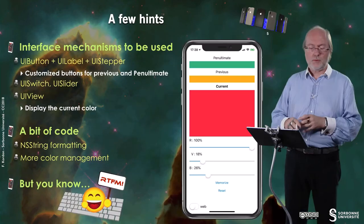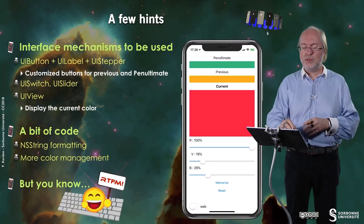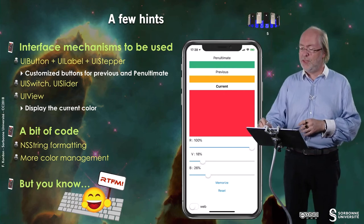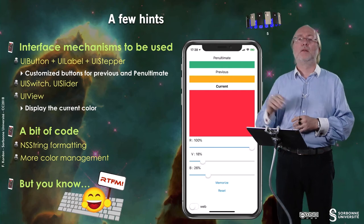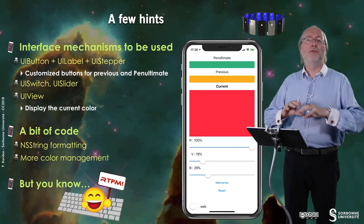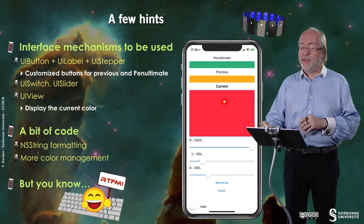Let me provide you with a few hints. The interface mechanisms you have to use are UIButton, UILabel, UIStepper. What you don't know is this area and this area are UIButtons, but they are custom buttons without any text inside, and you are just playing with the background color in a very simple way.